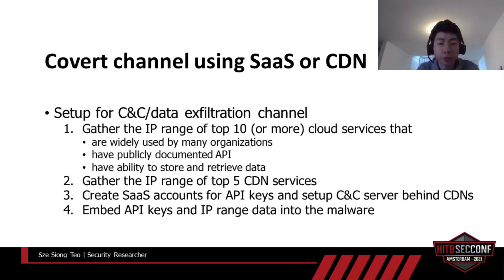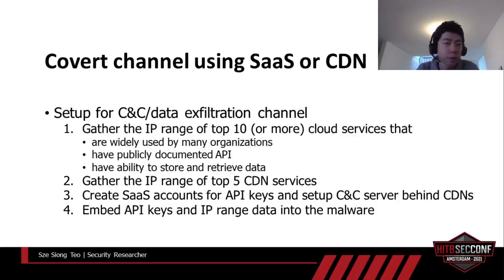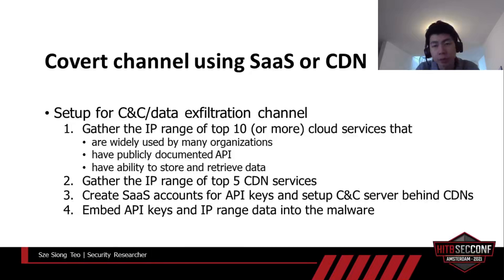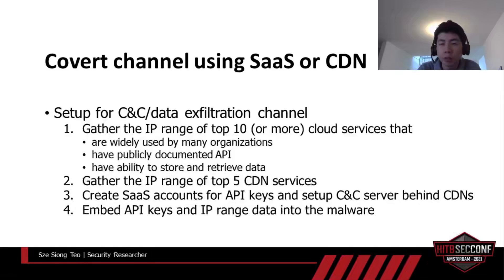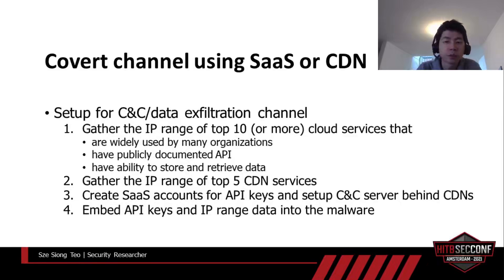Before the attack, we need to prepare a few things. First, gather the IP range of popular cloud services — pick those that are widely used by many organizations, have their API and IP range documented publicly, and most importantly, have the ability to store and retrieve data. Second, select a few popular CDN services and gather their IP ranges. Third, create accounts for these selected cloud services to obtain API keys and set up our C&C server behind the selected CDNs. The last step is to embed the API keys and collected IP range data into the supply chain malware for later use.